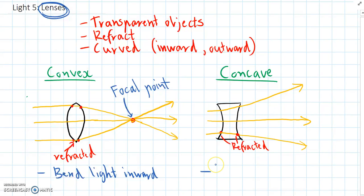So overall concave lenses, they bend light outward. There's no focal point in these type of lenses.